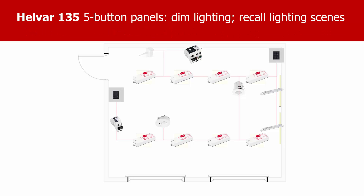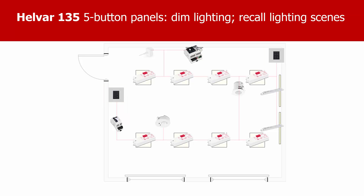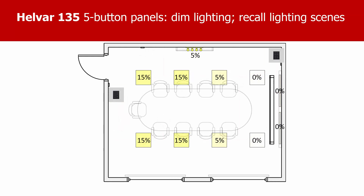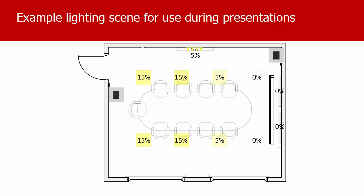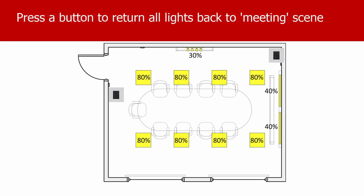Instead of standard light switches, in this room there are button panels by the door and next to the projector screen and board. They can be used to dim or brighten the lights as required, or recall different lighting scenes. For example, for a presentation you might like most lights dimmed down to a particular level. After the presentation, the presenter can press one button to bring all the lights back to their standard levels.